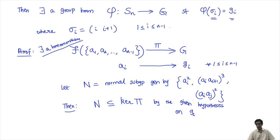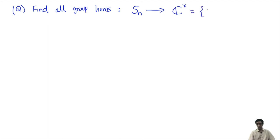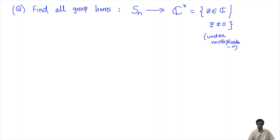Here is one simple application. Find all group homomorphisms from the symmetric group Sn to C×, the set of non-zero complex numbers under multiplication. This is a group since it has inverses and so on. The question is: what are all group homomorphisms you can define from Sn to this group?